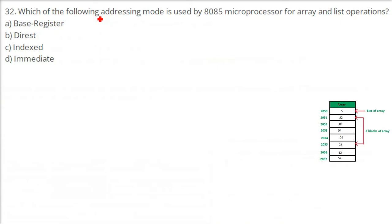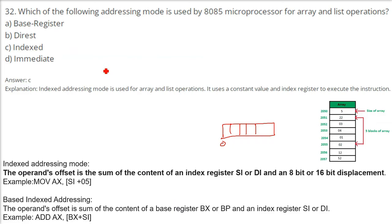Which addressing mode is used by the 8085 microprocessor for array and list operations? Whenever array and list operations come, think about indexing — array is all about index, indicating where data is stored. The answer is C — indexed addressing mode. This indexed addressing mode uses a constant value and an index register to execute the final instruction, making it suitable for array and list operations.